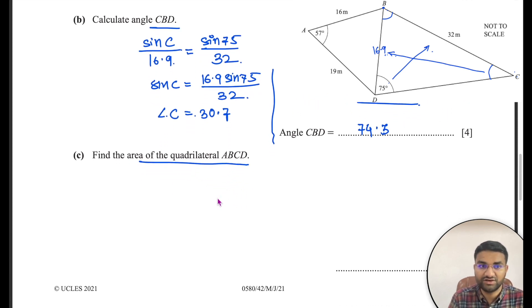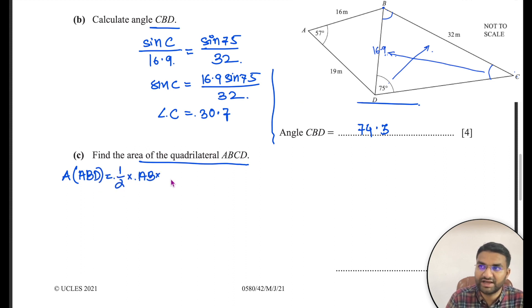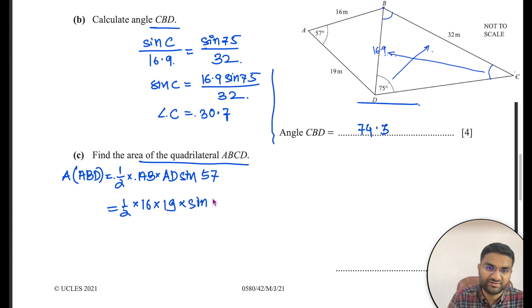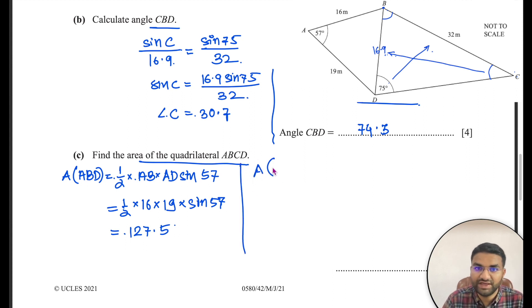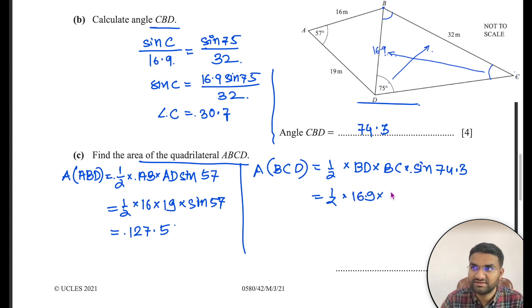Now find the area of the quadrilateral. First, area of triangle ABD = ½ × AB × AD × sin 57° = ½ × 16 × 19 × sin 57° ≈ 127.5. Then for triangle BCD: area = ½ × BD × BC × sin(angle CBD) = ½ × 16.9 × 32 × sin 74.3°.